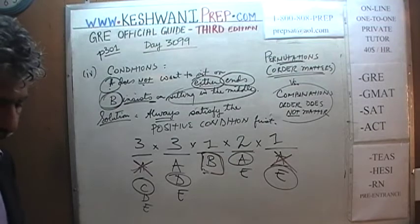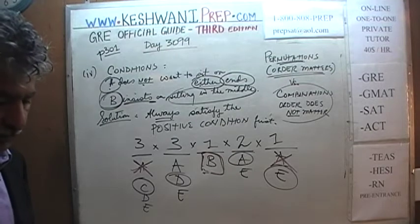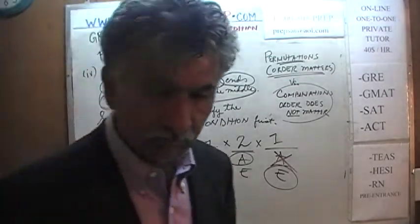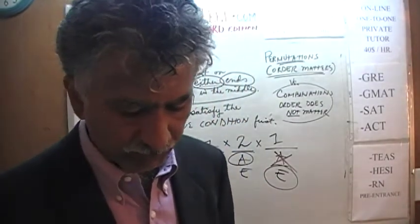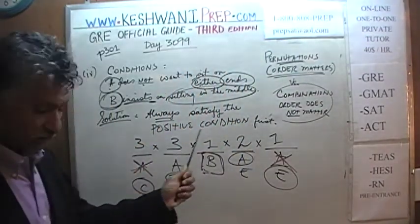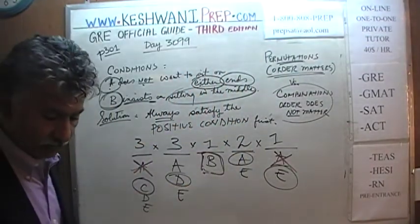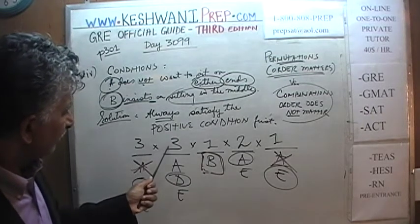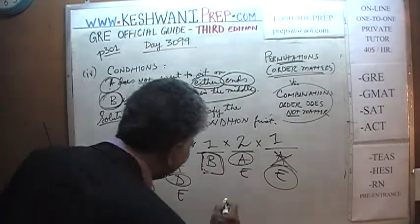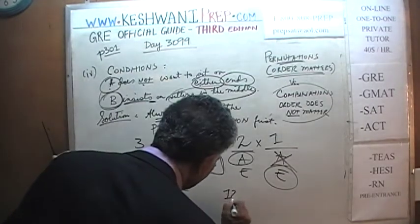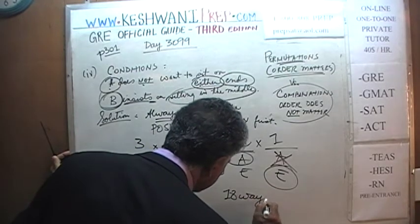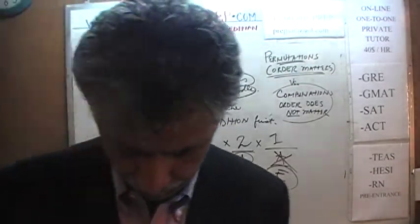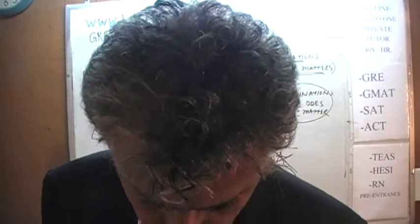This is different from what I have in my notes — I came up with twelve ways using three times two, but I think something is wrong. It is in fact three times three times two, which is eighteen ways.